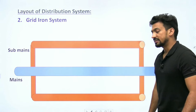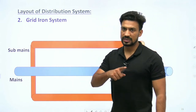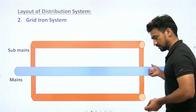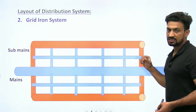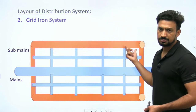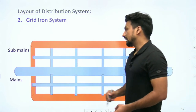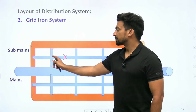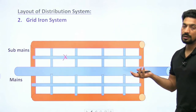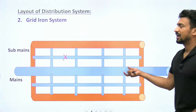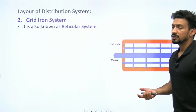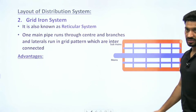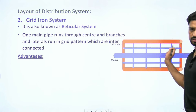Grid iron system - जैसे room में tiles का grid बना होता है या phone में menu grid होता है। इसमें laterals एक पूरे grid pattern में rectangular shapes बनाते हुए चलते हैं। इसे reticular system के नाम से भी जानते हैं। एक main pipe central region के through चलती है, फिर उसकी sub mains और branches grid pattern में चलती हैं। सारी pipes interconnected होती हैं - यह इससे connected, वह इससे connected।